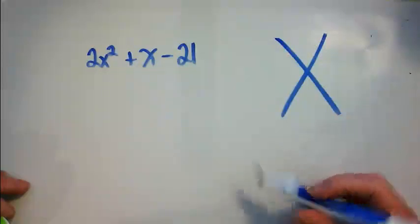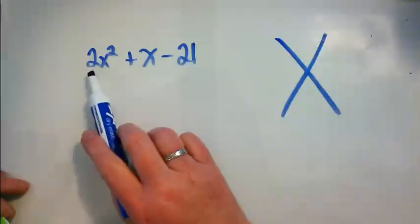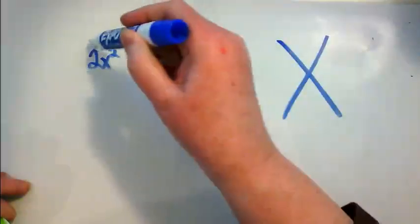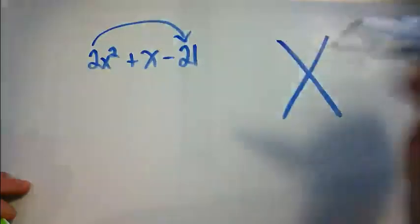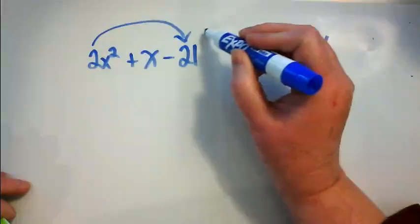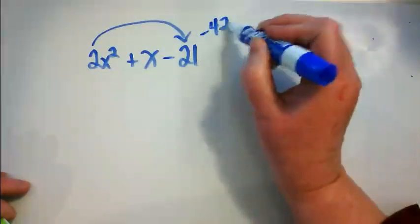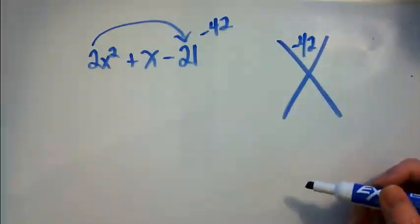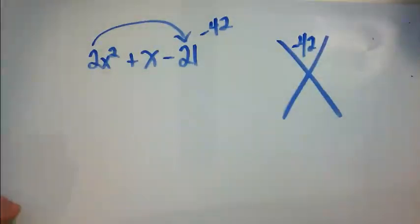So we're going to still use our X puzzle, but we have a number here, whereas last week when we worked with these problems, there was an invisible one here for every single problem. Before we can use our X puzzle, we're going to take and multiply these two numbers together, and 2 times negative 21 gets us negative 42. That's the number that we put at the top of our X puzzle this week for this problem.